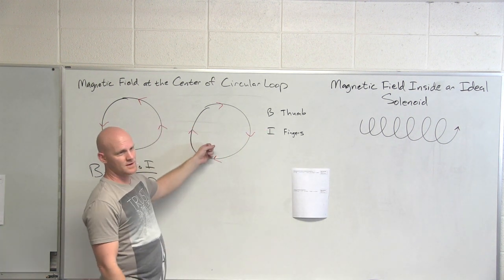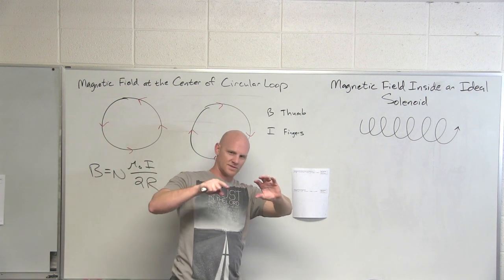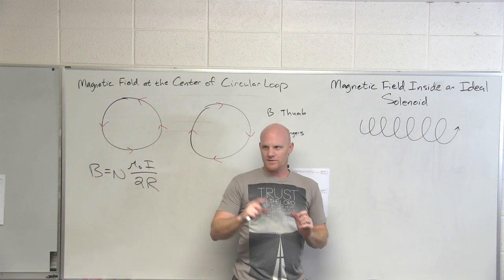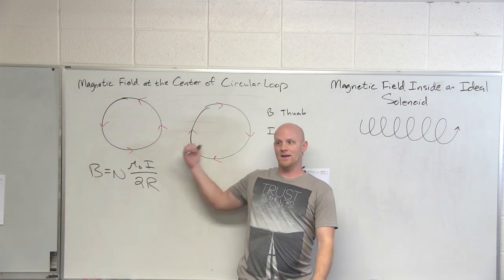But in this case it's going to have a length associated with it. These loops just keep building on one another and you end up getting this solid cylinder of current flowing in one direction. The right hand rule goes hand in hand with what we did before.